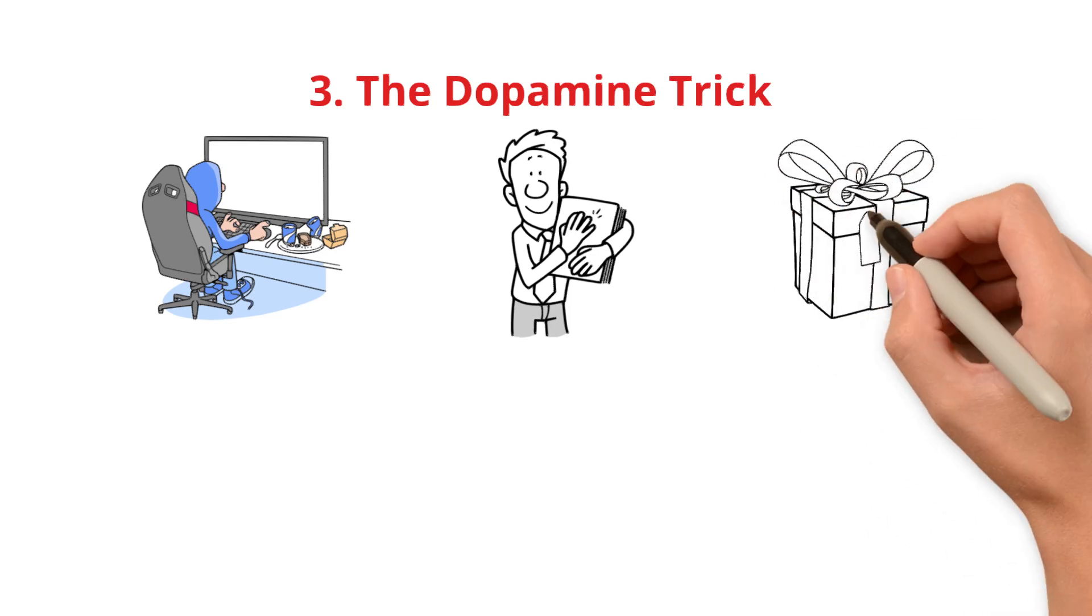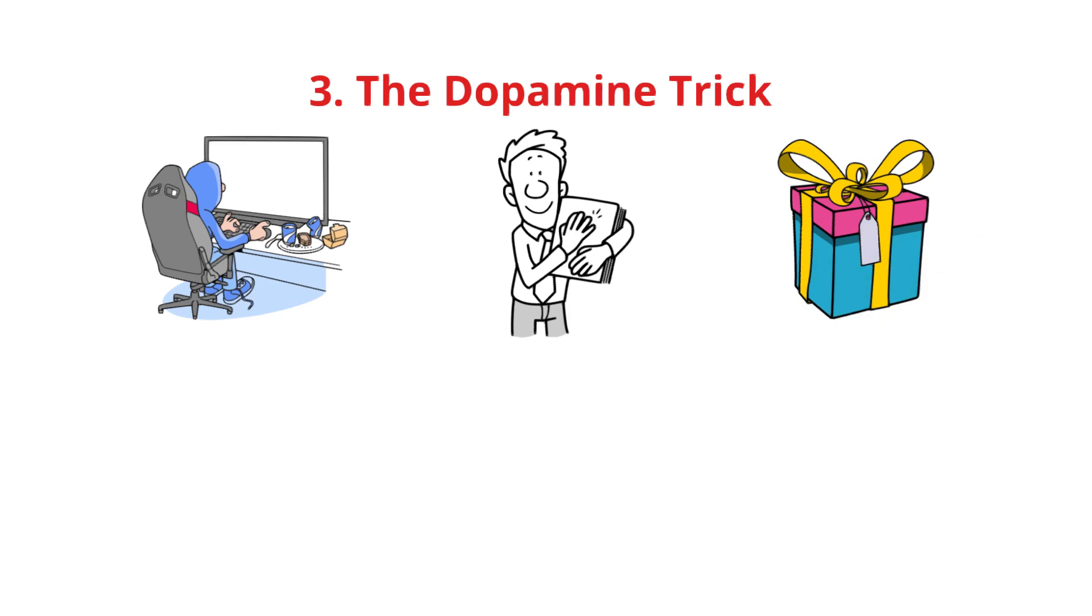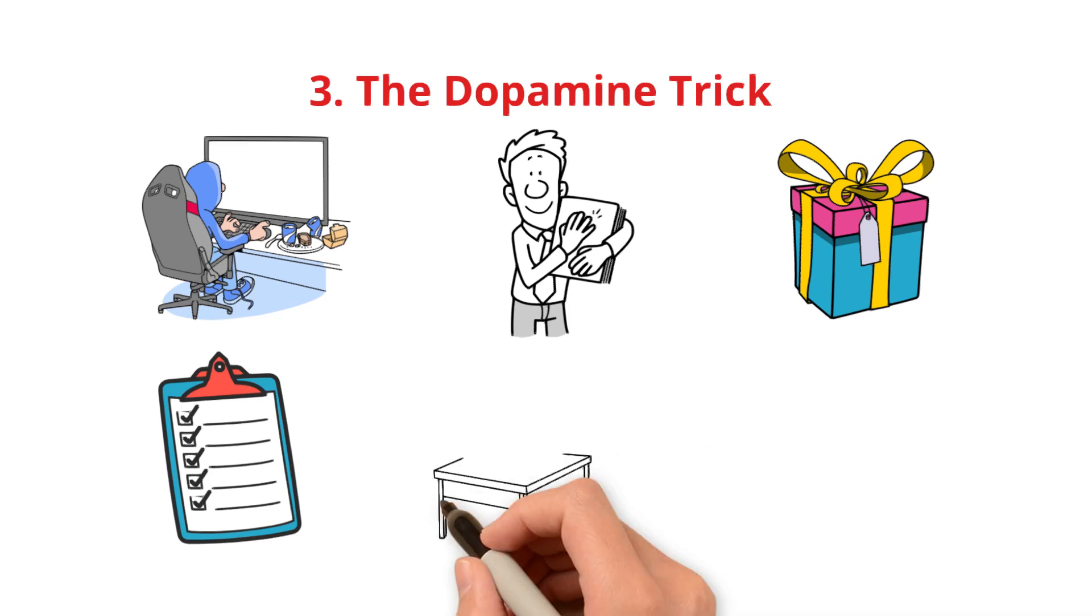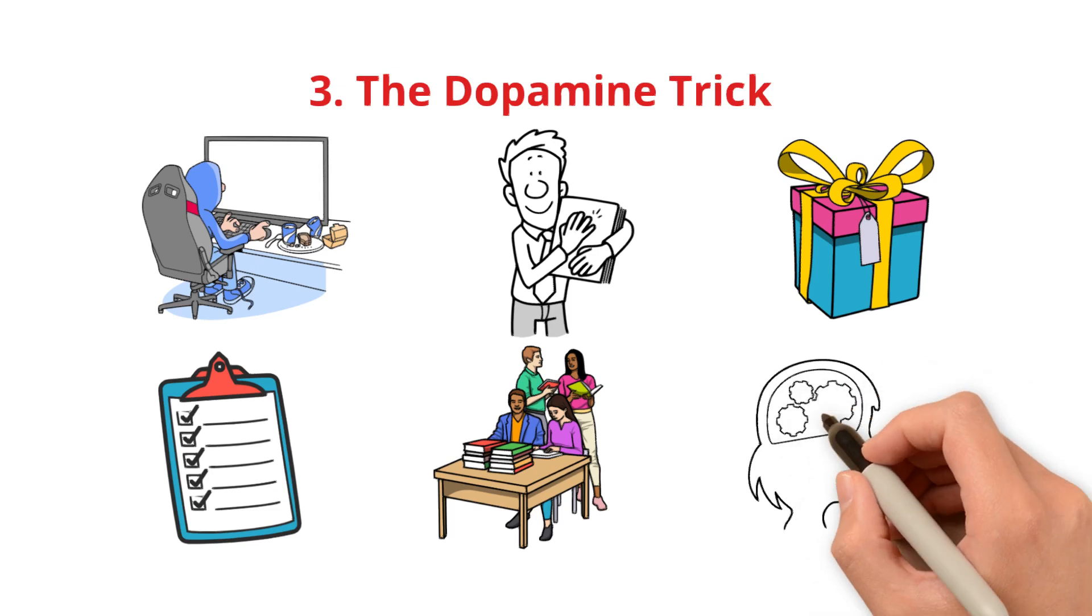Set small goals. For example, finish 3 pages, then reward yourself. Use a study tracker. Checking off tasks gives a dopamine hit. Make it social. Study with friends or join focus groups. Your brain craves progress. Use dopamine hacks, and you'll want to study. But what if you keep forgetting what you studied? Tip 4 will fix that forever.